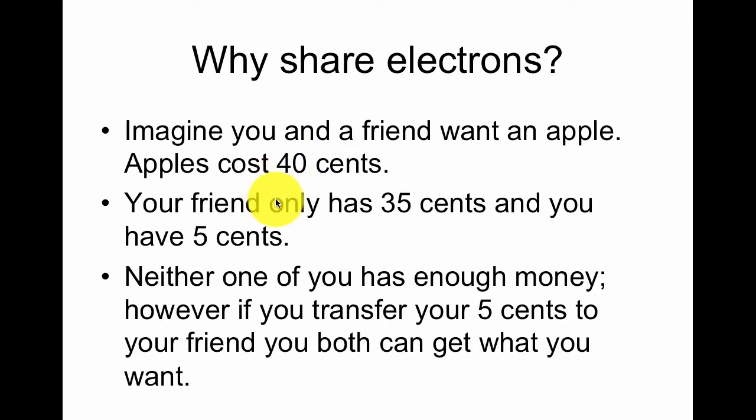The same thing happens with atoms. They want 8 valence electrons in their outermost shell. If they don't have enough, they're looking for other atoms willing to share or transfer electrons.